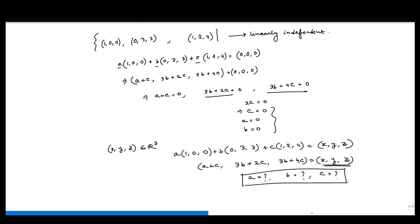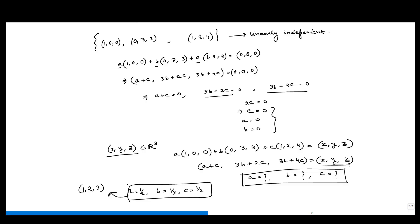So it is linearly independent and any vector of R3 can be written as a linear combination of these three vectors, so they form a basis. This is a geometrical illustration of how you find the basis of a vector space — here for R3 with the three vectors (1,0,0), (0,3,3), and (1,2,4) — and we have seen how spanning sets, linear independence, and basis are all related. Thank you.